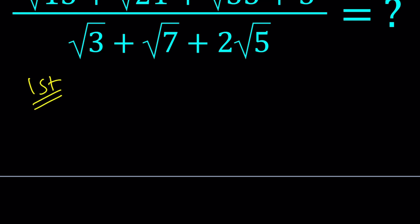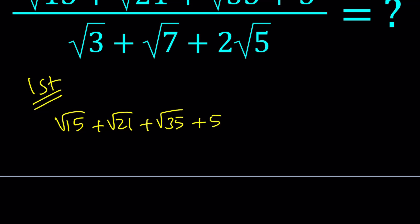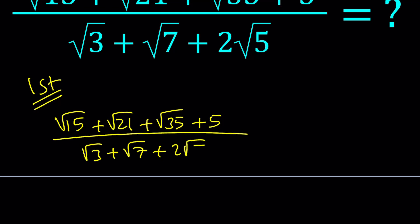For my first method, I just want to warn you it's going to be a little painful. Root 15 plus root 21 plus root 35 plus 5 divided by root 3, root 7, and 2 root 5. Notice that the radicals at the bottom will make up all the expressions in the numerator. If you multiply root 3 and root 5 you get root 15; this is 3 times 7; this is 5 times 7, and so on.